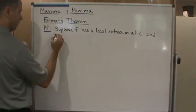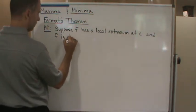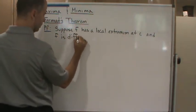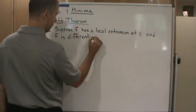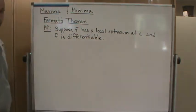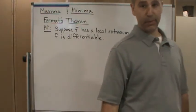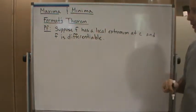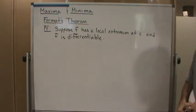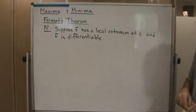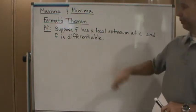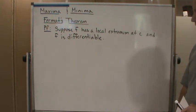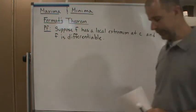So f is differentiable. There are the two conditions. So now what we need to show is that f prime of c is zero. That's what Fermat's theorem is saying: if we have a function that has a local extremum at c, and c is in the domain of the function and f is differentiable, then f prime of c is equal to zero. So that's what we need to show.